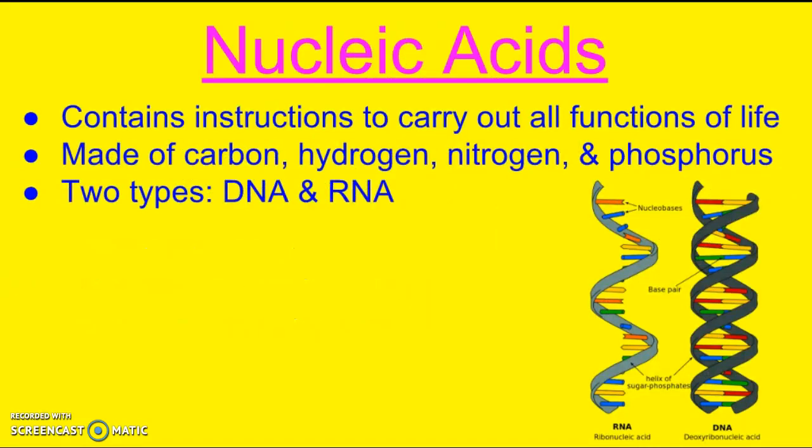Finally, we have nucleic acids. Nucleic acids contain instructions to carry out all functions of life. They're made of carbon, hydrogen, oxygen, nitrogen, and phosphorus. There are two types: DNA and RNA. I just realized I left out the oxygen — so nucleic acids are also made with oxygen. That is it on chemical compounds in cells. I hope you found it useful, and thank you for listening.